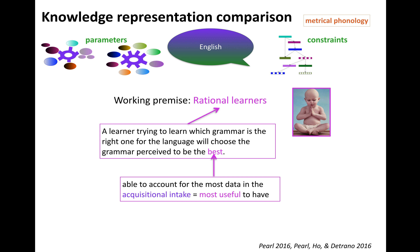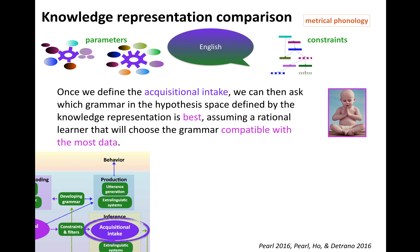So what does best mean? Best in this case means able to account for the most data in the learner's acquisitional intake, because that's the one that's most useful to have — it has the best coverage for the data you're trying to account for. Once we define what the acquisitional intake looks like, we can then ask which grammar in the hypothesis space defined by each representation is the best one, assuming a rational learner that will choose the grammar that's compatible with the most data. It covers the most data, it's the best one.